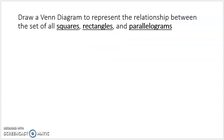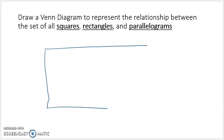Here's an example from the notes and from homework: draw a Venn diagram to represent the relationship between the set of all squares, rectangles, and parallelograms. Now all of those are quadrilaterals, so I'm going to say that the universal set in this case — my box — is the set of all quadrilaterals. I could have made the universal set the set of all polygons, but I chose quadrilaterals.